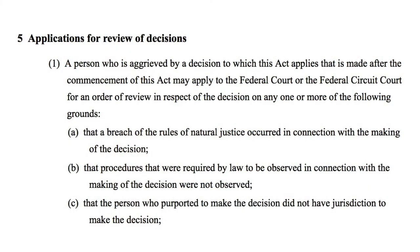The idea of the ADJR Act was that it wouldn't fundamentally change the concept of judicial review, but it would take all of that received wisdom from the common law and repackage it. The key section of the ADJR Act — the section we're going to be looking at for the next few weeks — is Section 5, which sets out all of the different grounds on which a person can apply for a decision to be reviewed. In other words, the section is a great big list of all the things that can go wrong with decision-making.